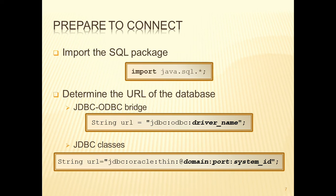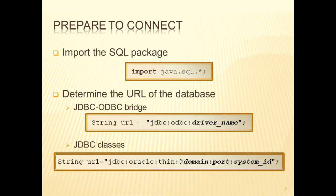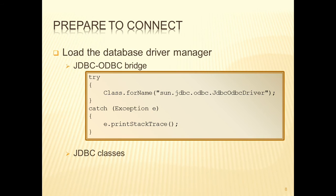For Oracle, for example, here at the university, we would use: jdbc:oracle:thin:@ followed by the domain name of the host, the port number, and the system ID for the database. MySQL will have a different connection string — again, you need to go to the database manufacturer to find the details. So the first two things are: import the package and work out your URL. The third thing is to load the database driver manager within your program.